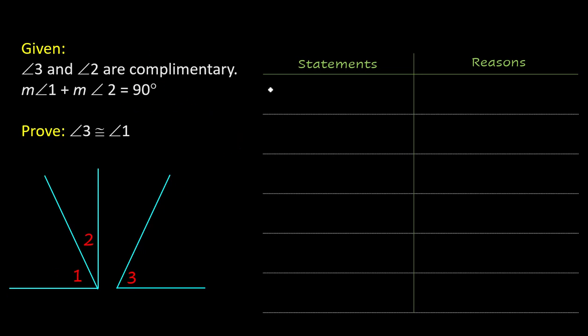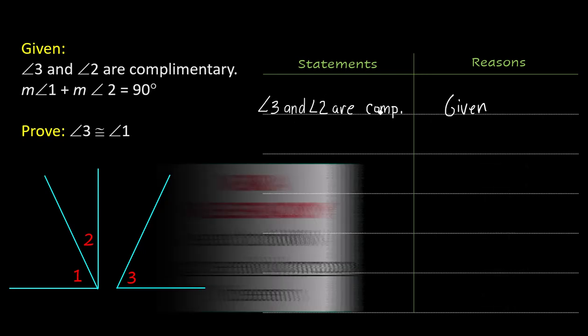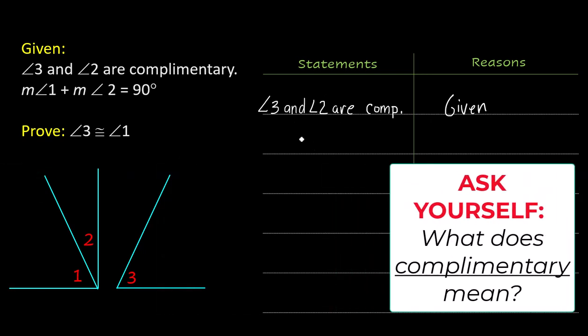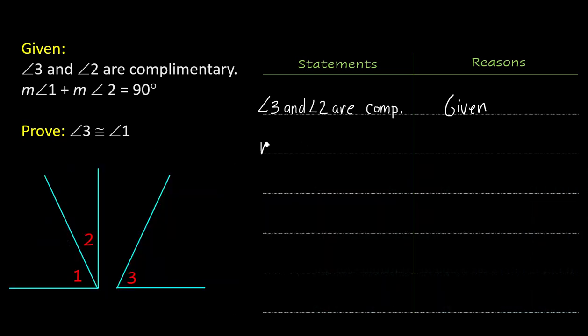We're going to start with one of the givens. Angle 3 and angle 2 are and I'm going to abbreviate because of space complementary. And the reason I know that's true is because they told me so you write given. Now think about what I just wrote. What does that mean? That just says complementary so what can you assume is true from that? That'll be my next line.